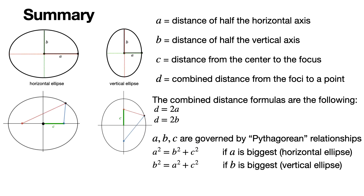Let's review everything. a is half the horizontal axis, b is half the vertical axis, c is the distance from center to focus, and d is the combined distance from the two focal points to any point on the ellipse. The combined distance d = 2a for a horizontal ellipse and d = 2b for a vertical ellipse. The Pythagorean-like relationships are a² = b² + c² for a horizontal ellipse, and b² = a² + c² for a vertical ellipse. The appendix will show how we get from the focal definition to the standard ellipse formula.